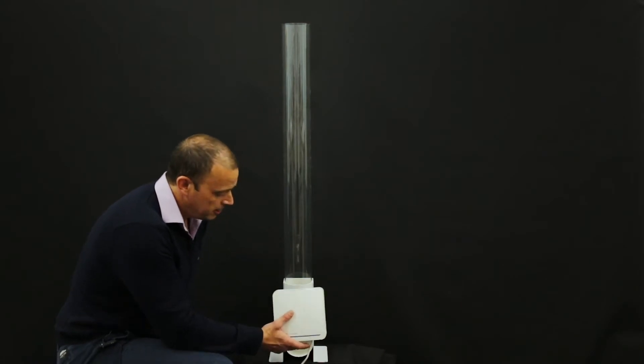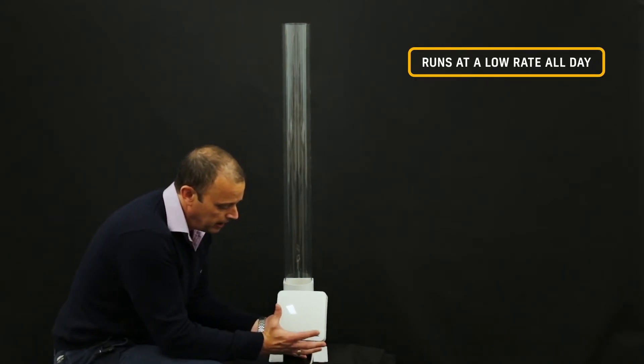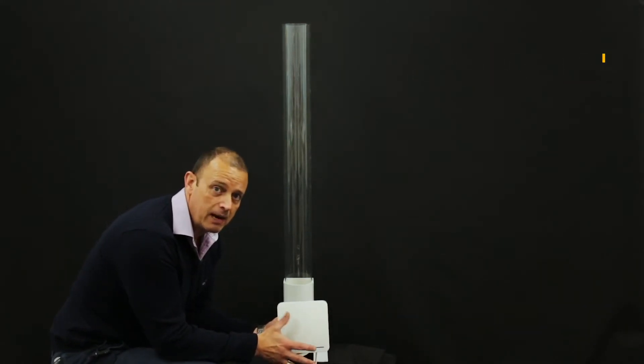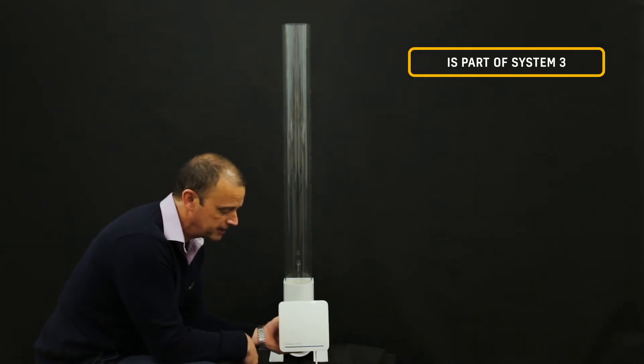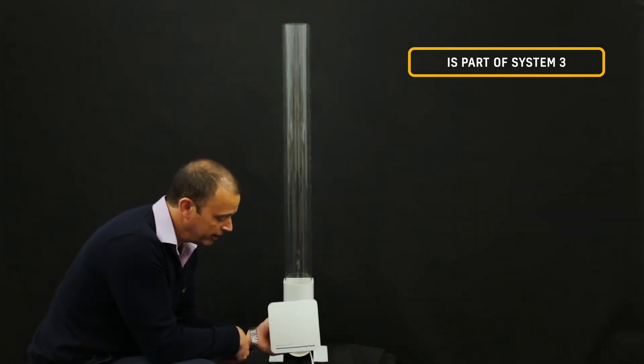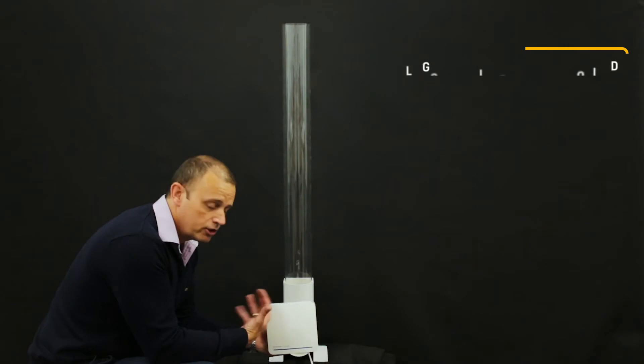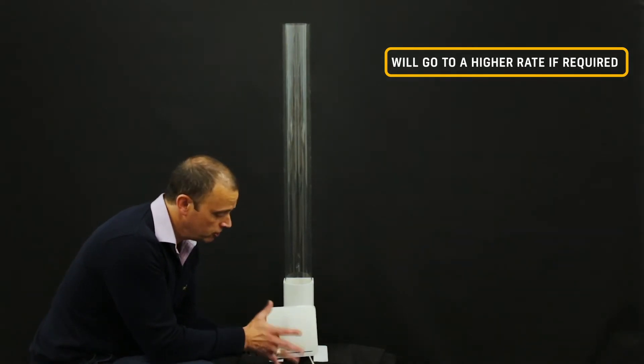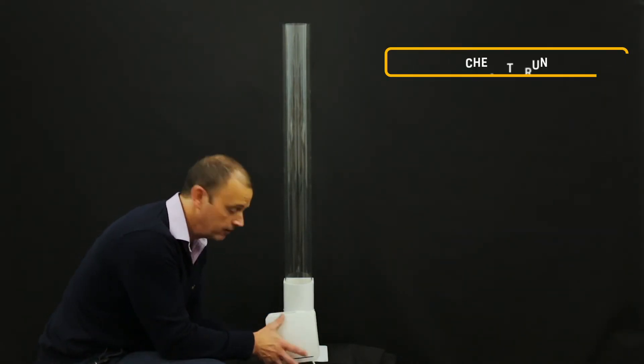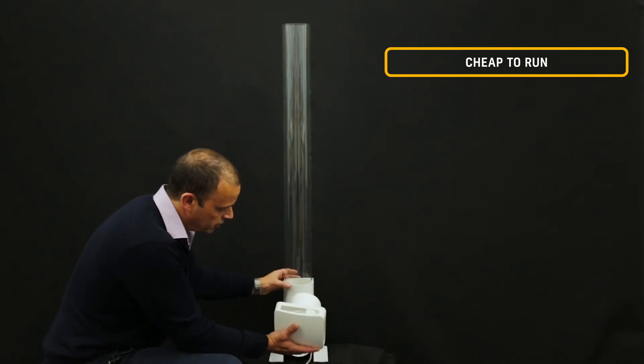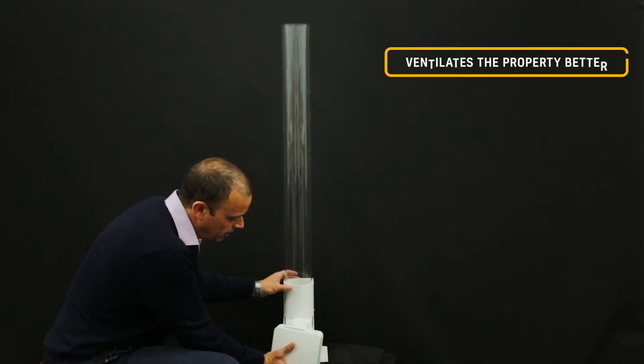Just so you can hear me. So this is continuous running. It's designed to run at a low rate all the time, would come under System 3 of Building Regs, and then it will go to a higher rate when required. And although it's running all the time, it's very energy efficient, doesn't cost a lot to run, and it is actually better for ventilation than being a continuous system.